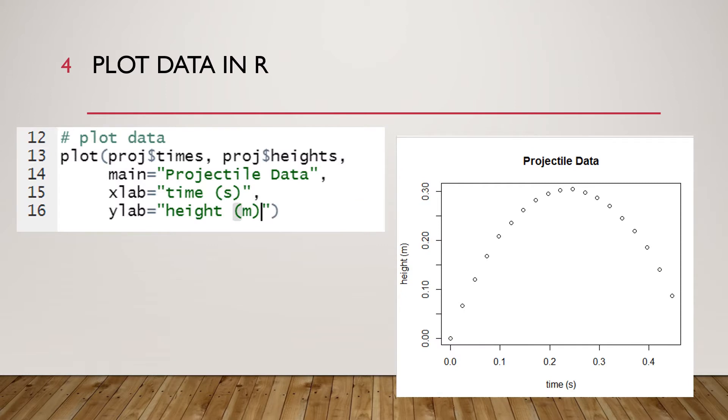Starting in line 13 we are plotting the data. We are taking an x comma y approach and so the first argument is proj dollar sign times. The second argument is proj dollar sign heights. Our third argument is main which is going to give the chart a title. The fourth argument is xlab which is going to give it an x axis label and the fifth argument ylab is going to give it a y axis label.